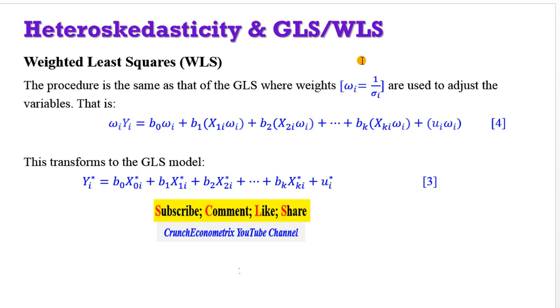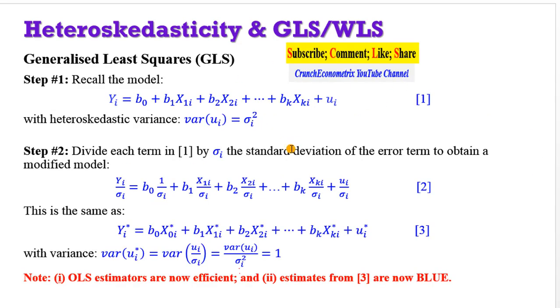Once again, for the weighted least squares, you are going to have a weighted structure by 1 over sigma. And by the generalized least squares, you are going to divide each term in your model by sigma, which is the same thing as multiplying everything in equation 1 by 1 over sigma. So the GLS approach and the WLS approach will give the same outcome.